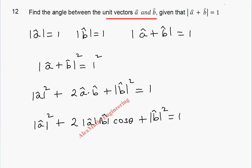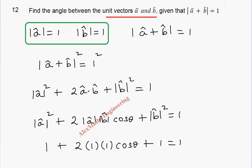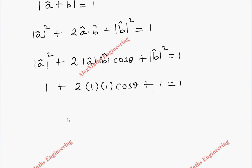Now we are going to apply mod a equal to 1 and mod b equal to 1 in these places. So this will become 1 plus 2. This is 1 and 1 cos theta plus 1 equal to 1. So totally, this 1 and 1 we can add.